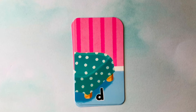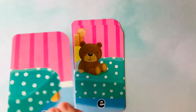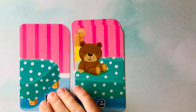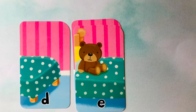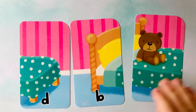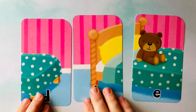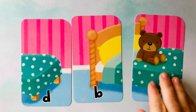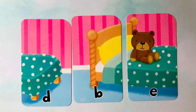Let's learn to spell words. Looks like we have a D here. We also have an E. And we have a B. I think this picture looks like a bed.